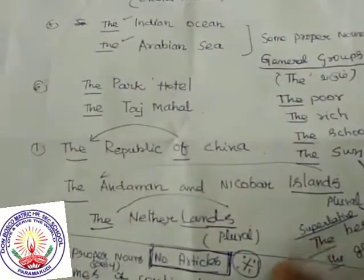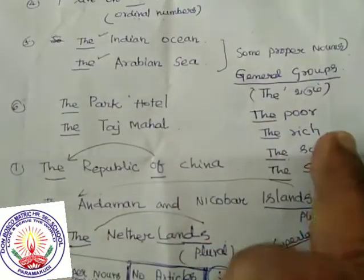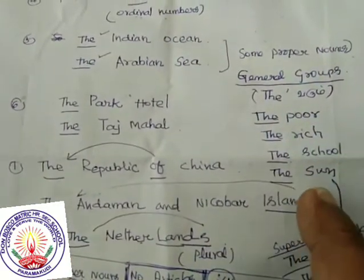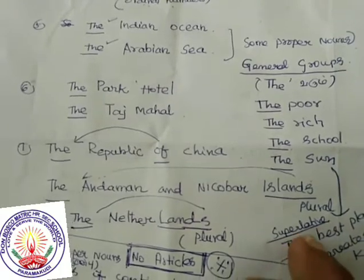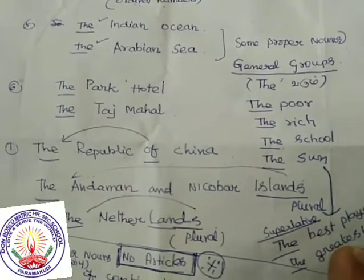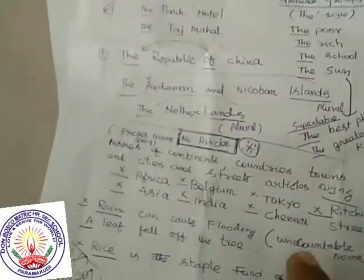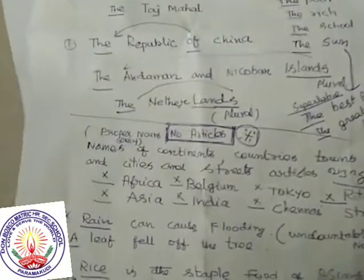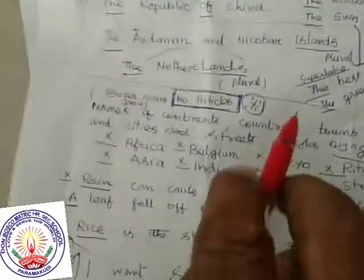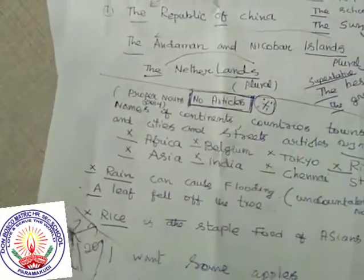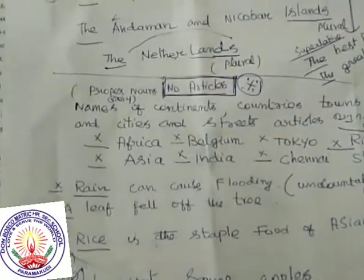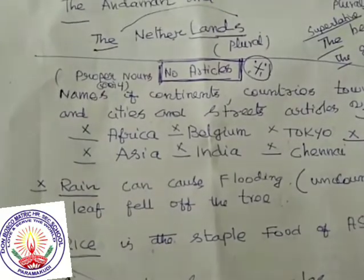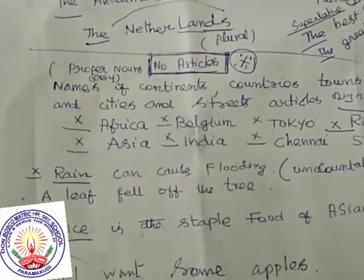Before general groups, we put 'the': the poor, the rich, the old, the young. Before superlatives, we must put 'the': the best player, the greatest, the youngest, the wisest.